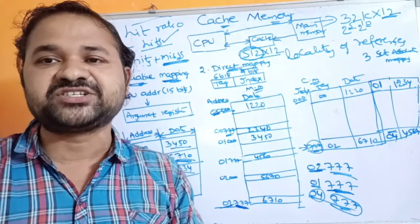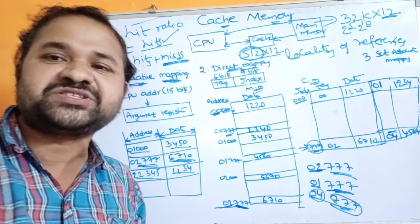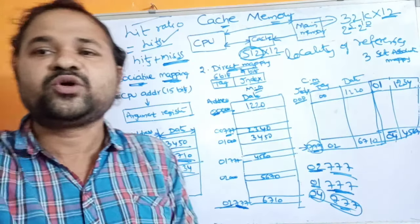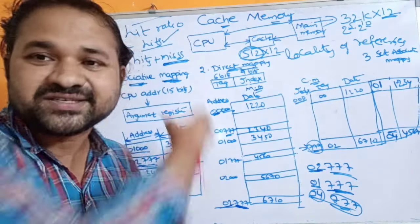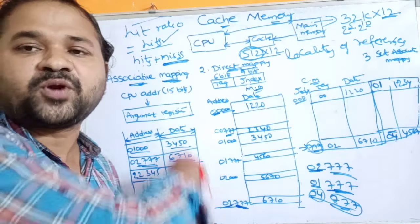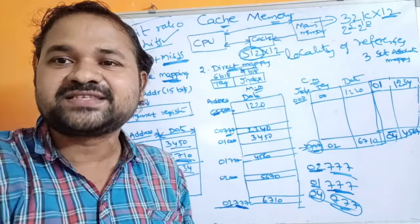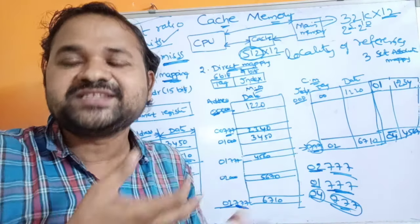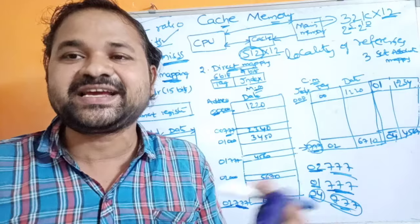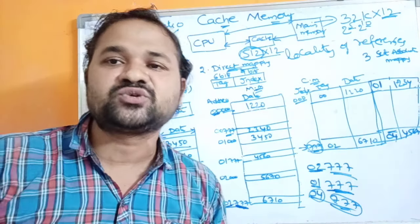In summary, there are three mapping functions: direct mapping, associative mapping, and set associative mapping. Associative mapping is very expensive. Direct mapping has the problem that each index address can store only one tag, so hit ratio may decrease drastically. We can overcome that problem with set associative mapping, where each index address can store multiple tags.